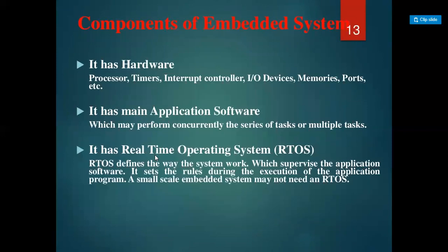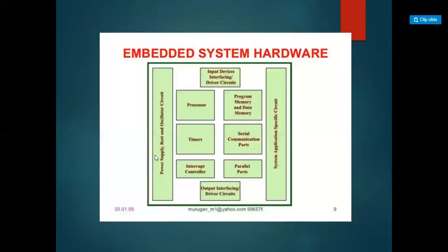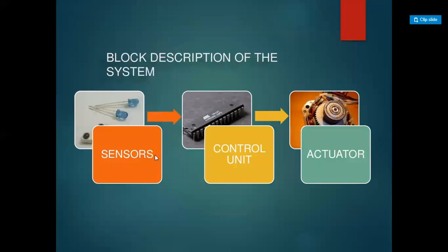Components of an embedded system include hardware such as processor, timer, interrupt controller, input/output devices, memories, ports, etc. It also includes main application software, which may perform concurrent or multiple tasks. A real-time operating system (RTOS) defines the way the system works, supervises the application software, and sets the rules during execution of the application program. A small-scale embedded system may not need an RTOS. The hardware components include power supply, reset and oscillator circuit, processor, timer, interrupt controller, program memory, data memory, serial communication port, parallel port, and application-specific circuits.